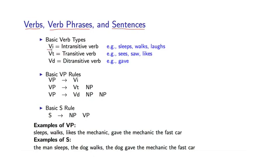I'm going to use the symbol VI to refer to intransitive verbs, VT to refer to transitive verbs, and VD to refer to ditransitive verbs.